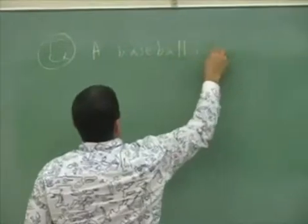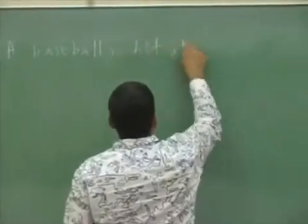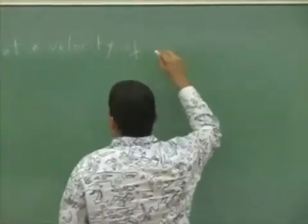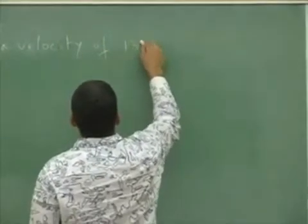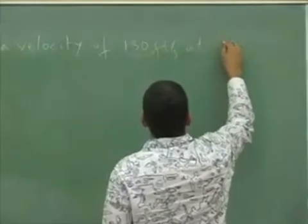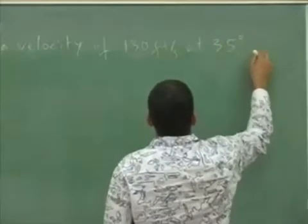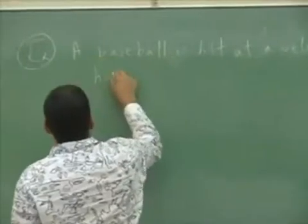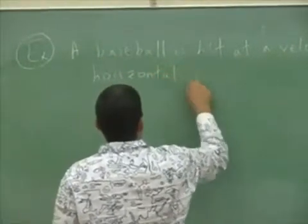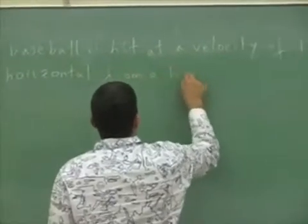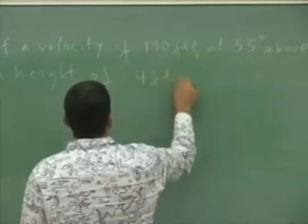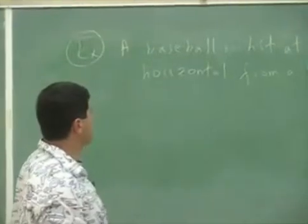Okay, a baseball is hit. So a baseball is hit at a velocity of 130 feet per second at 35 degrees above horizontal from a height of four feet.